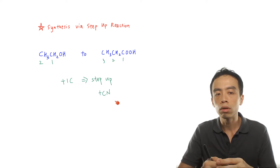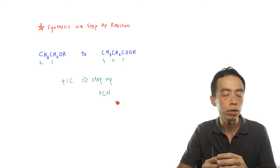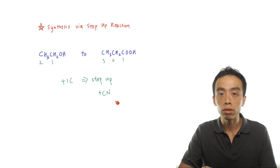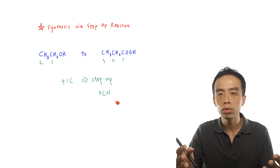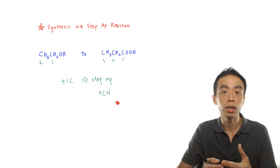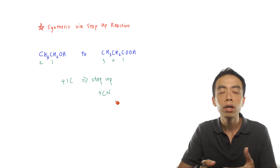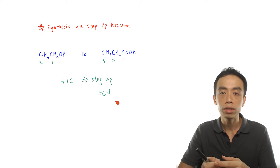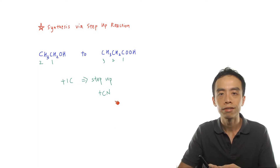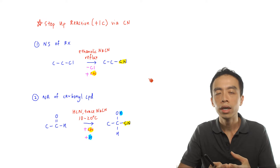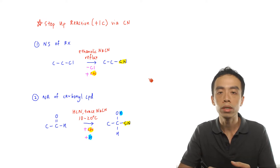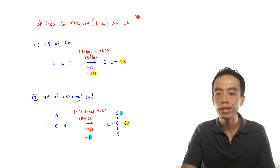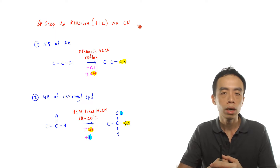So before we go through this question proper and work out the steps involved, it is a good idea to go through what are the two reactions that we can use to introduce nitrile. So we have our step-up reactions here. Now remember, in the syllabus, the only way for me to add 1 carbon is to go through CN, a nitrile functional group. But in the syllabus, there are two reactions that I can use to introduce nitrile.